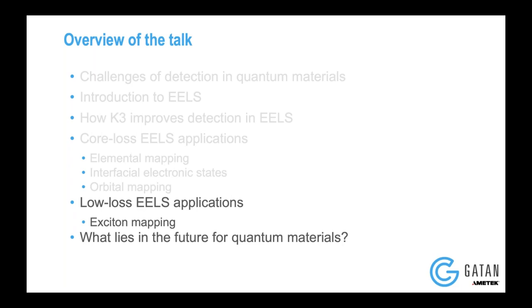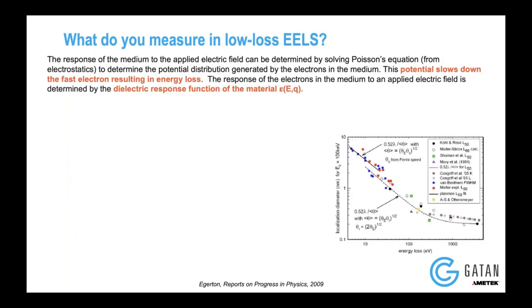Now let me talk about the other aspect of EELS, which is low-loss EELS. What I'll be sticking to today is mostly in the visible spectrum, because the monochromator resolution in TEAM 1 is limited to about 0.15 eV. So what we could truly measure is in the visible range, which is between 1 to 2 eV. In that range, low-loss EELS is very sensitive to the dielectric response function of the material. We also have to understand that at low-loss EELS, you have natural electron delocalization — as shown by Egerton's graph. In core loss EELS, theoretically it's possible to get atomic resolution, but in low-loss EELS it's very tough to get atomic resolution because of how the electrons are delocalized.